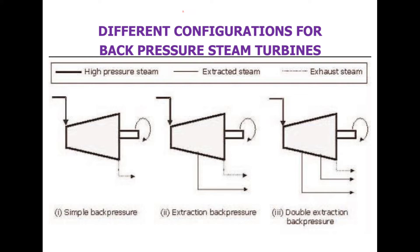The configurations involve high pressure steam, extracted steam, and exhaust steam. A simple backpressure is one type of configuration for backpressure steam turbines. Another is the extraction backpressure, and the third is the double extraction backpressure. In the simple backpressure type, there is a single entry and exit of steam through the turbine. In the extraction backpressure type, one additional exit is provided beyond the normal exit. The double extraction backpressure provides two extraction points between the entrance and exit of the turbine.